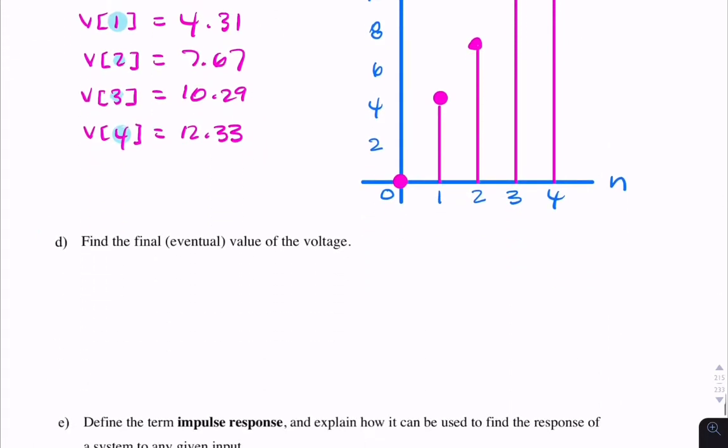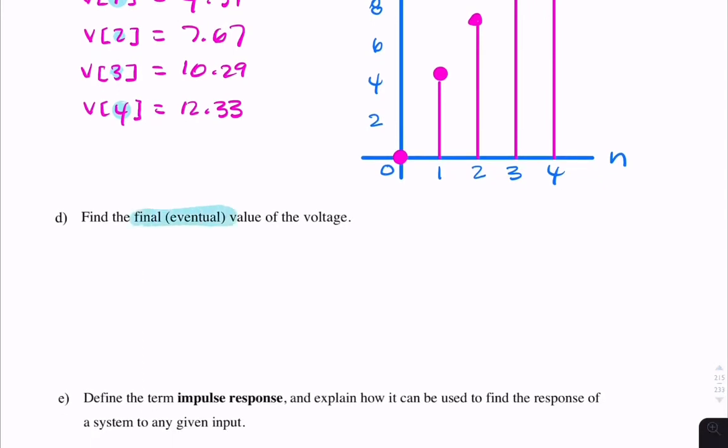Part D asks for the eventual value. As N approaches infinity, what's V of N? The eventual value is the limit as N approaches infinity of V of N. In V of N, we can just write the expression.